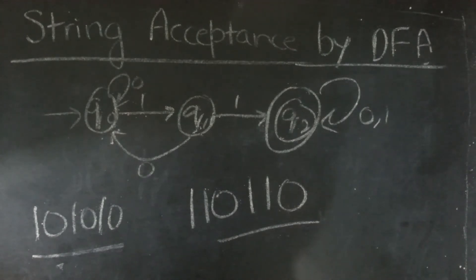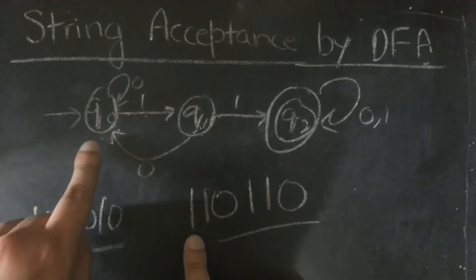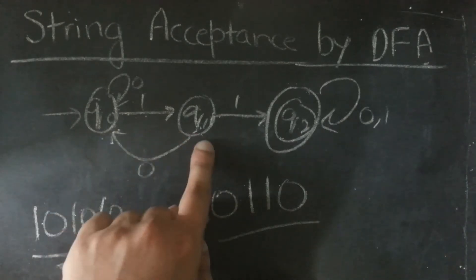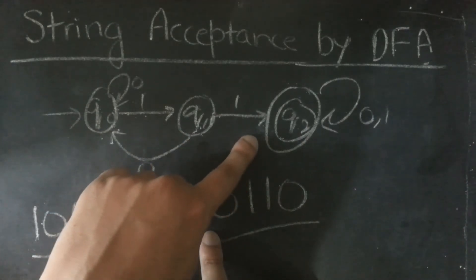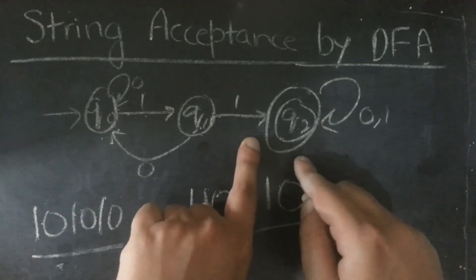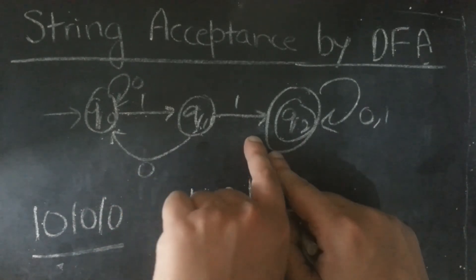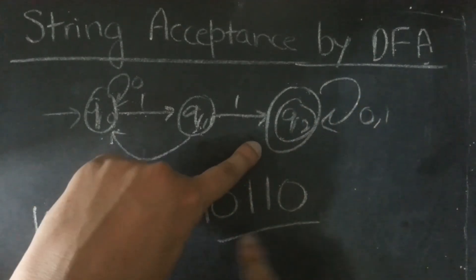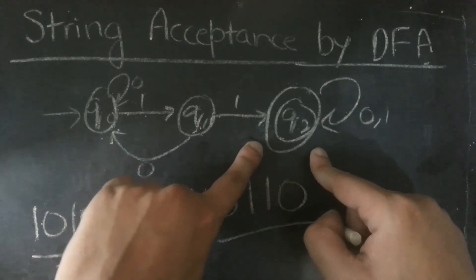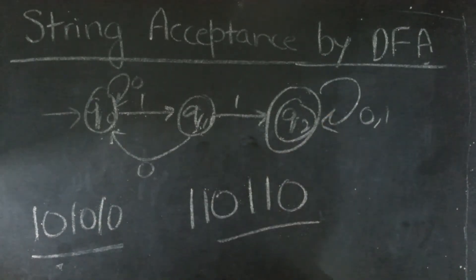For this, we start with the initial state. On input 1 we'll go to q1, then on 1 again we'll go to q2. Now you see that there is no transition out of it, only self-loops. So any combination of 0 and 1 will remain on q2, and since q2 is the final state, the string is accepted.